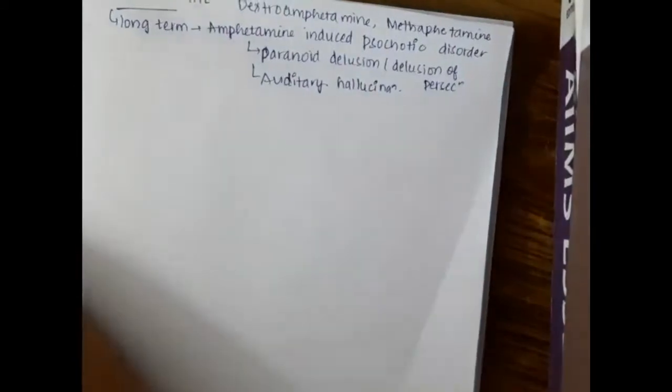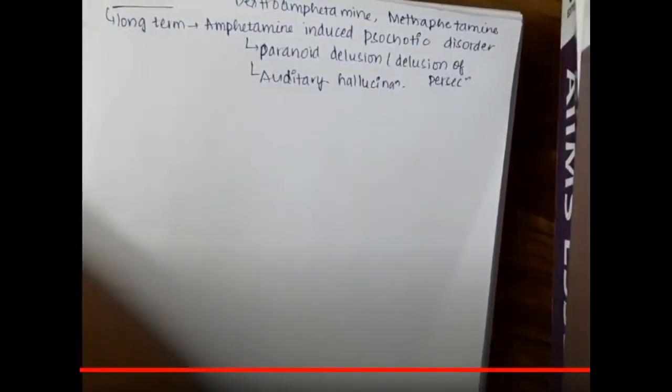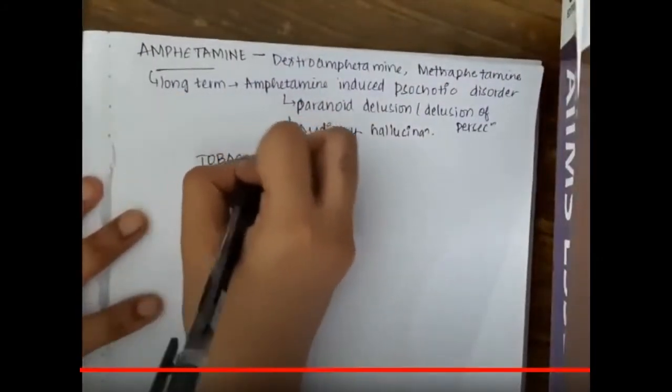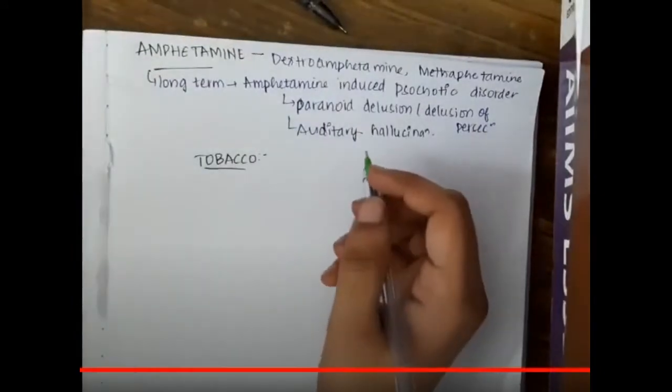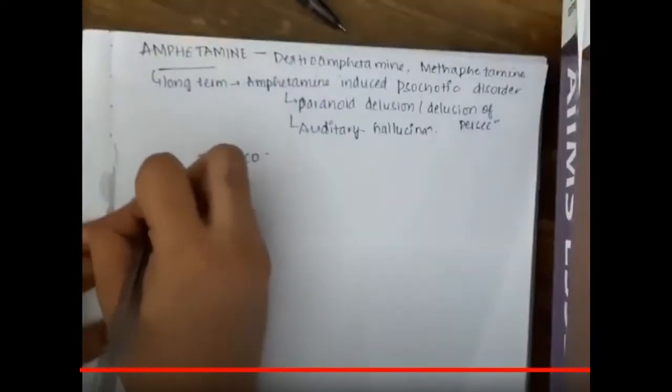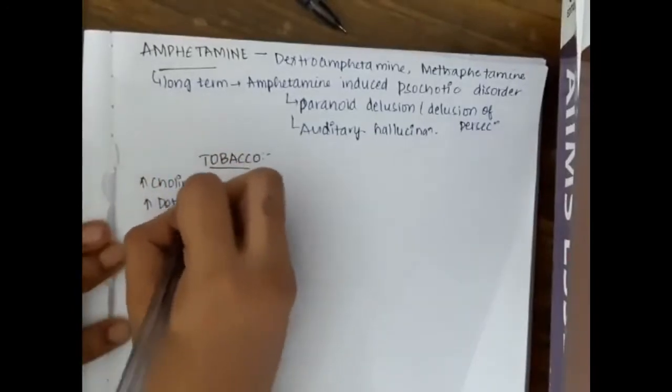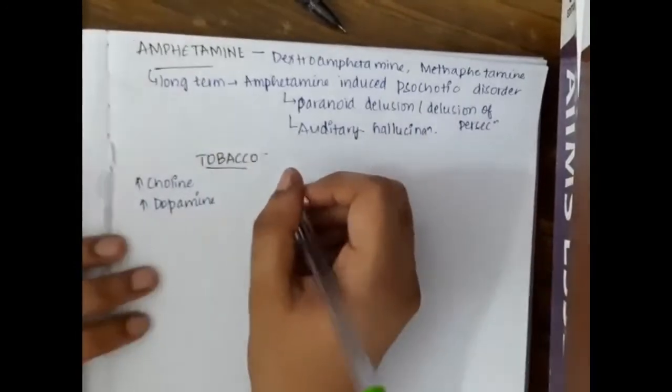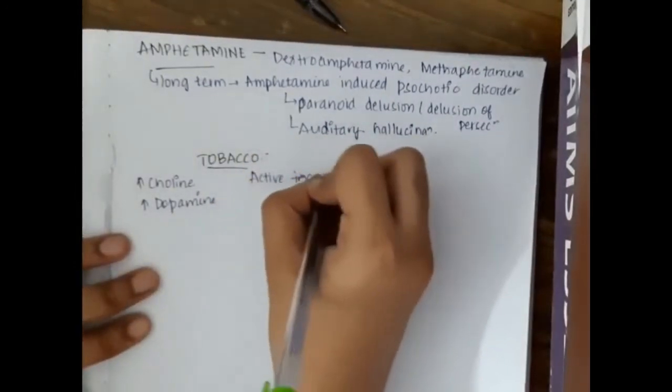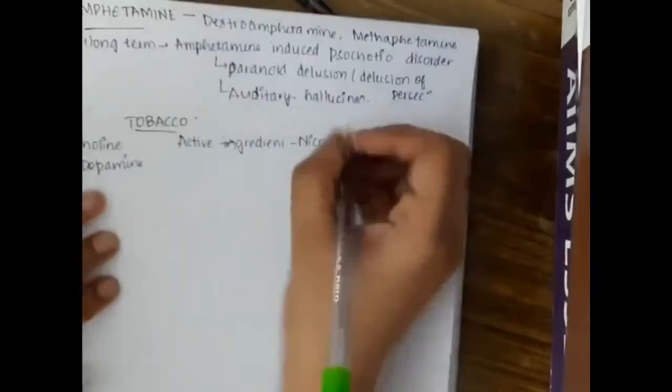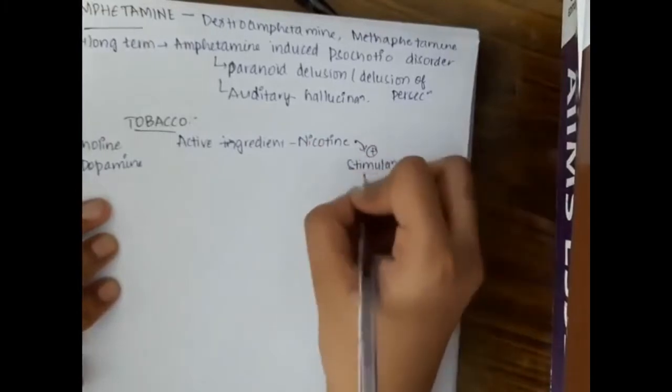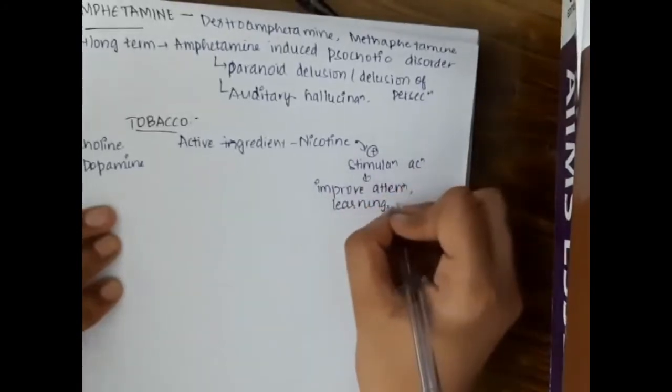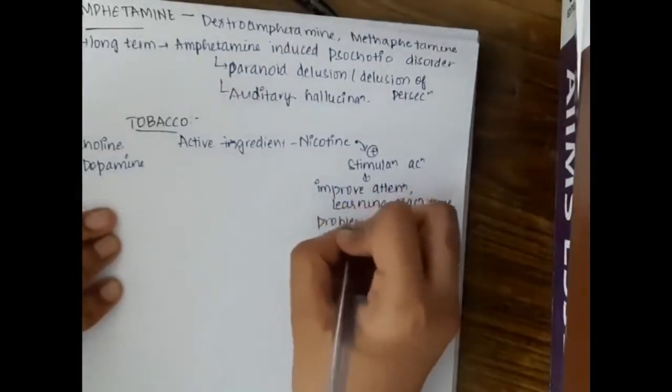The next important abused drug is tobacco. It is most easily available. Tobacco increases the choline hormone and also increases dopamine. The active ingredient present in tobacco is nicotine. This nicotine activates the stimulation action, thus improves attention, learning, reaction time and also problem solving ability.